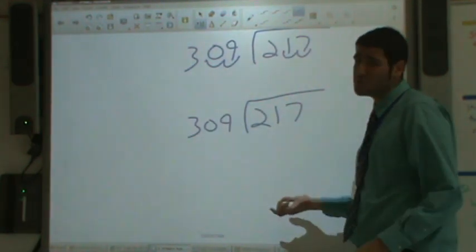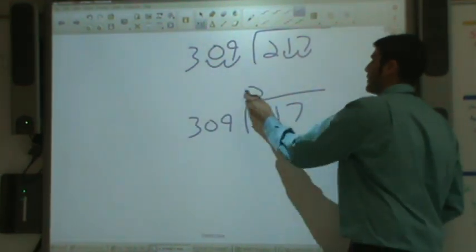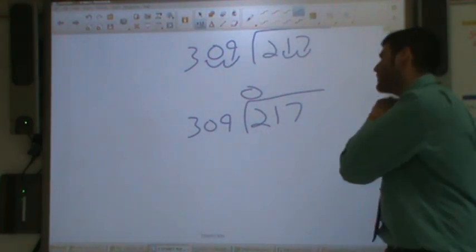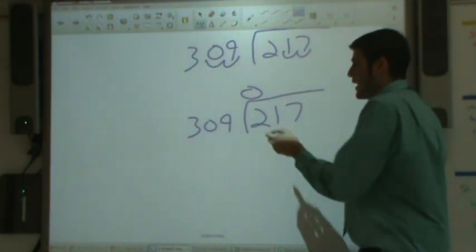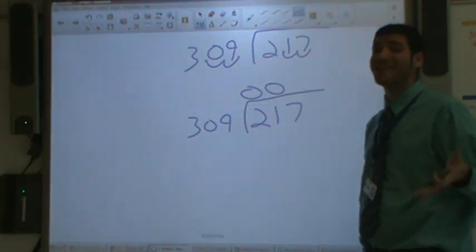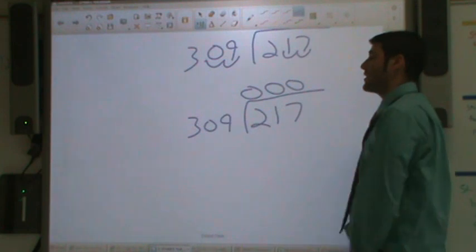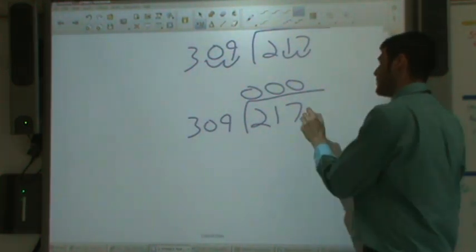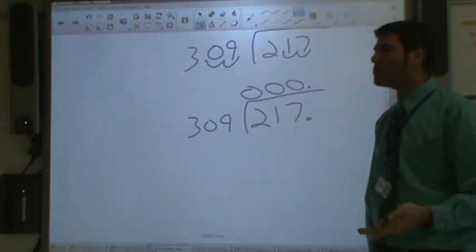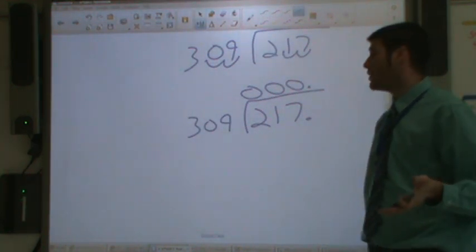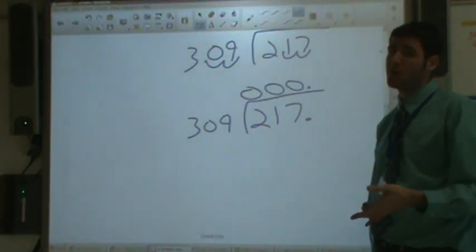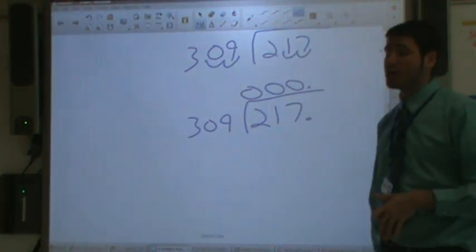Now we are ready to start our division problem. Does 309 go into 2? Absolutely not. Does 309 go into 21? Again, absolutely not. Does 309 go into 217? Again, no, it does not. So we have three zeros there. Decimal point here, which is good because we knew we had to have a number less than one, since we were dividing a smaller number by a bigger number. So far it's matching up.